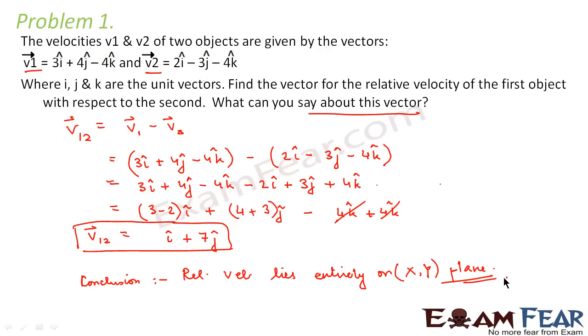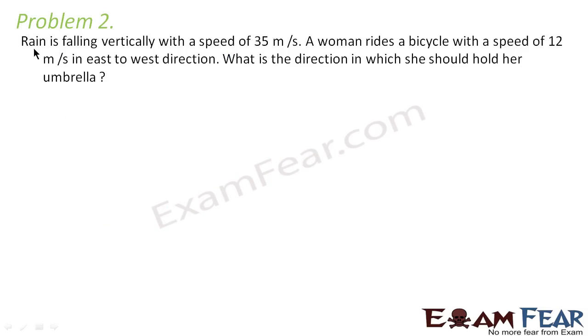Fine. Now let us go ahead and look at yet another problem on relative velocity. The problem states: rain is falling vertically with a speed of 35 meter per second. So let us suppose this denotes the direction of the rain which is falling with a speed of 35 meter per second. A woman rides a bicycle with a speed of 12 meter per second in east to west direction. That means this is the velocity of the rain and the woman is traveling from east to west direction.